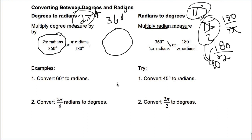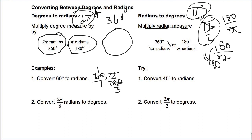It works the same for the other direction. Take 60 degrees and convert to radians: 60 × π/180. Using the smaller number is a bit easier. This becomes a fraction — 60 goes into 180 three times, so the answer is π/3. So 60 degrees equals π/3 radians.